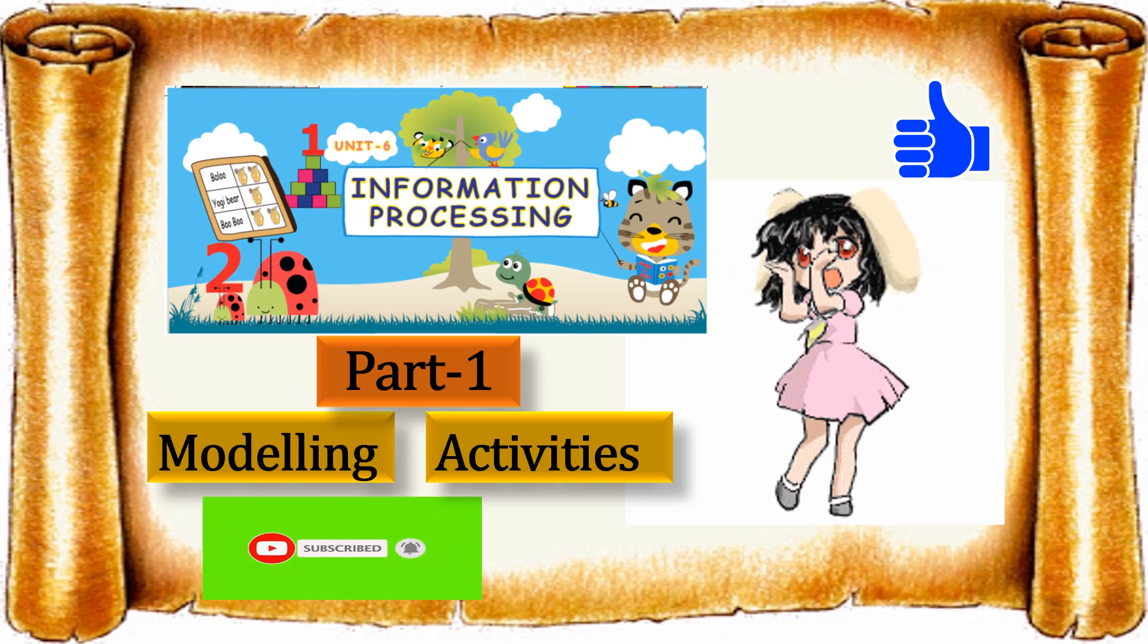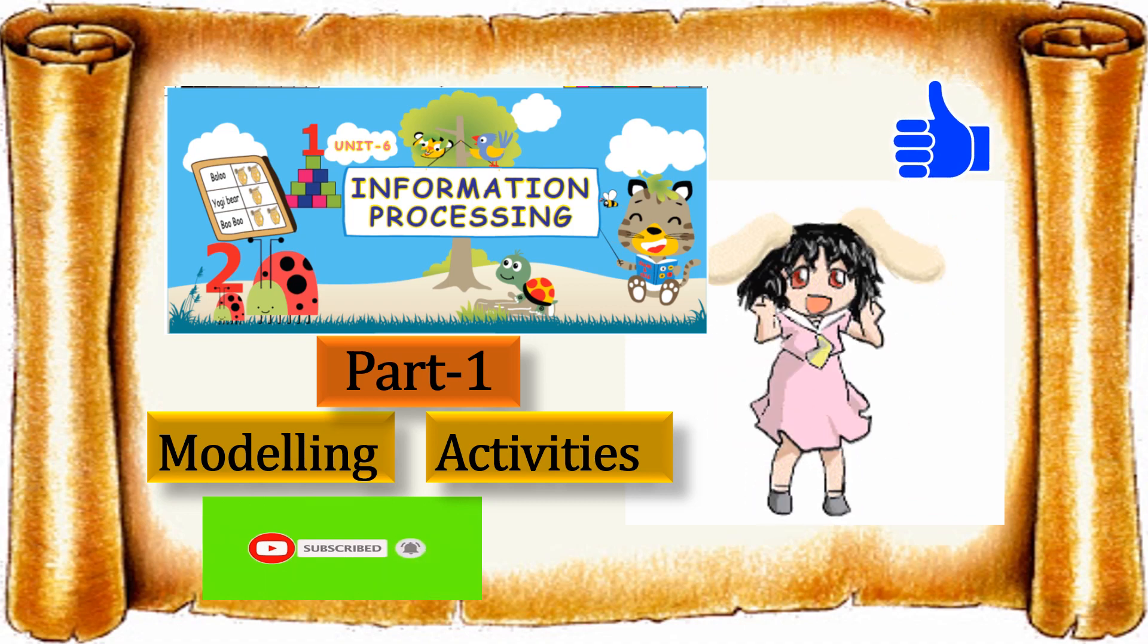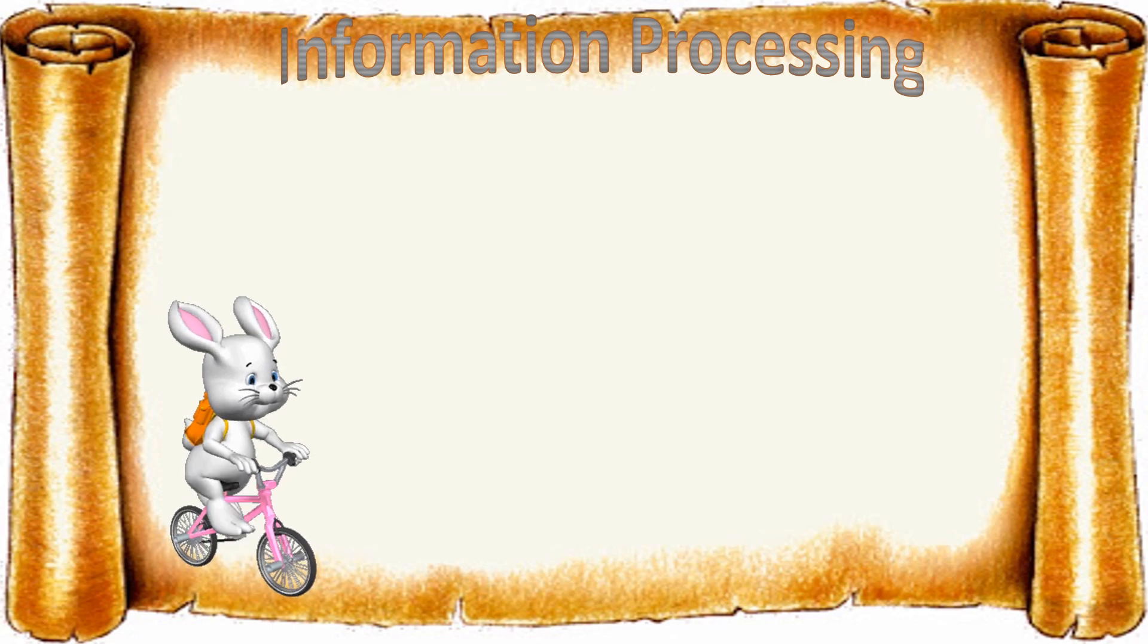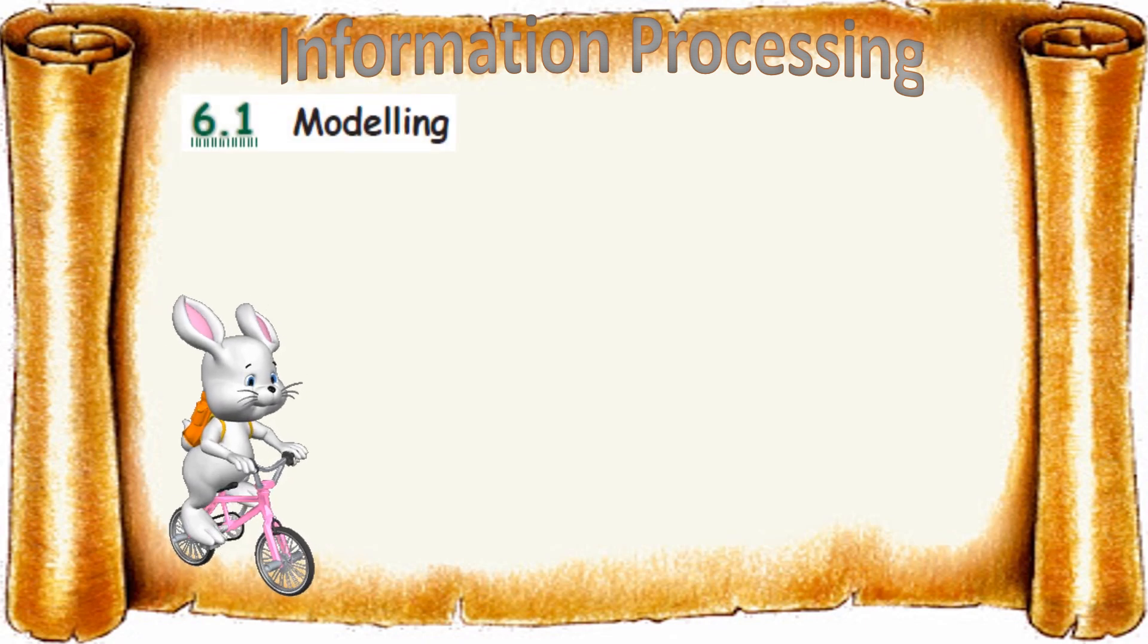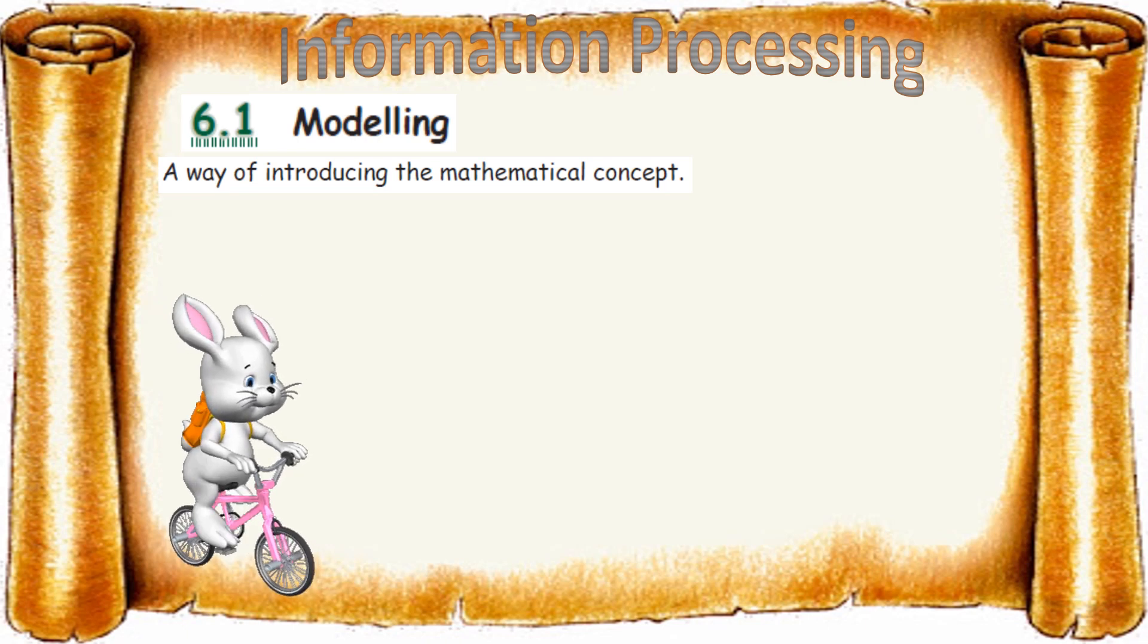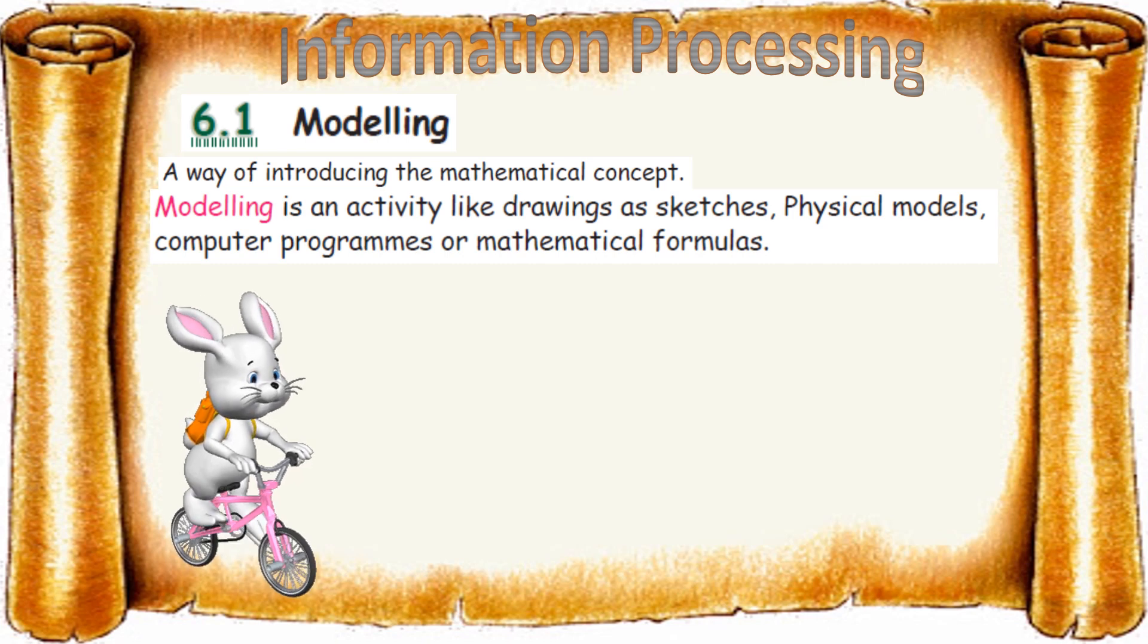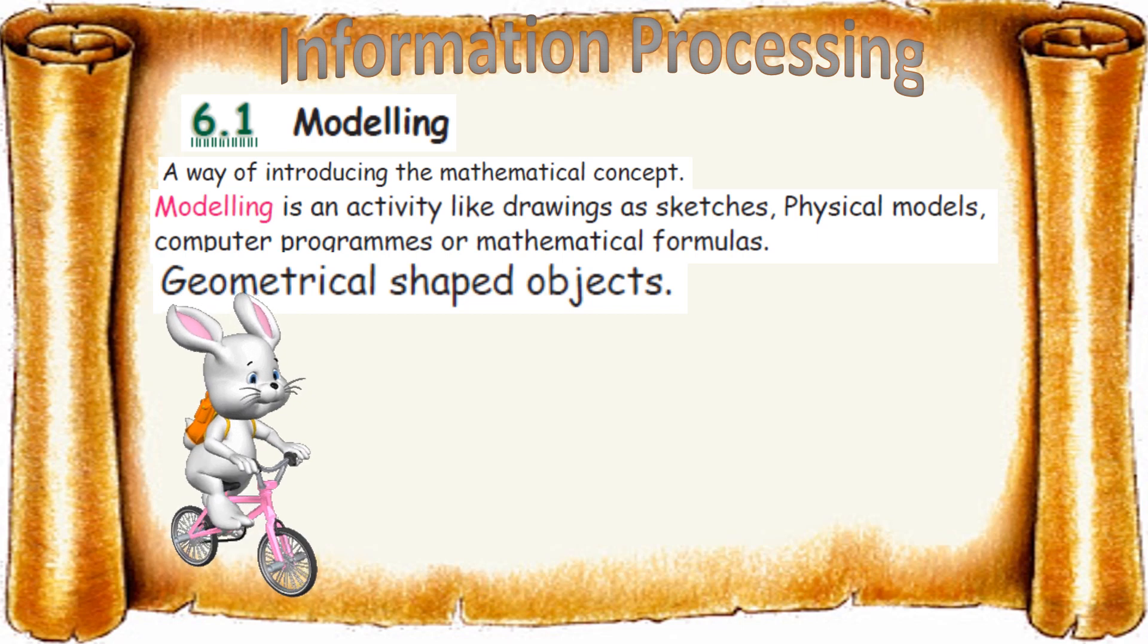Welcome to second term unit 6, information processing part 1. In this session we are going to learn about modeling and their activities. This is an interesting lesson, you're going to enjoy it. Modeling is a way of introducing mathematical concepts. All our things are based on four basic shapes: triangle, circle, square, and rectangle.